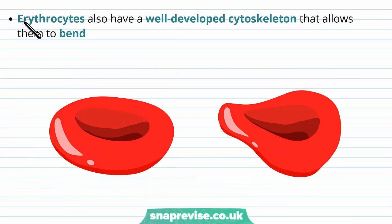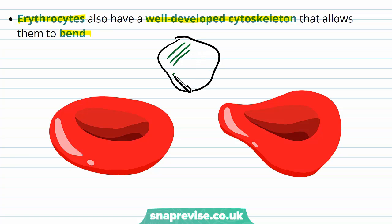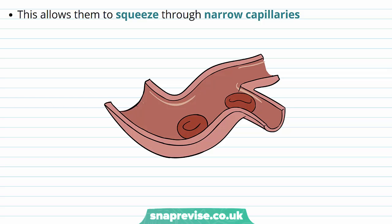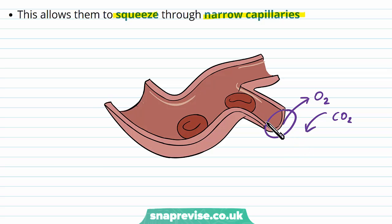The cytoskeleton found within erythrocytes is also very well developed and it allows the shape to bend as it passes through blood vessels. The cytoskeleton is a set of filamentous, string-like proteins that span the inside of the cell in lots of different types and directions, and they work together to control the shape of the cell. One important feature is that it allows red blood cells to squeeze through narrow capillaries — the blood vessels where gas exchange happens — so that every cell can deliver its oxygen to the tissue. Otherwise if it was too stiff and rigid it would block up the vessel.